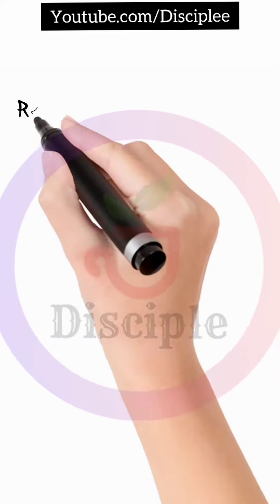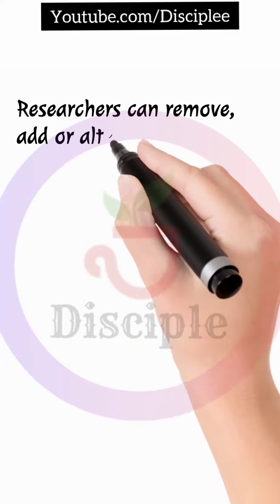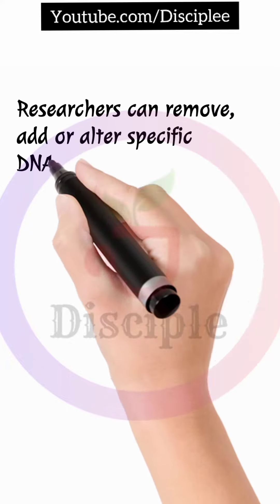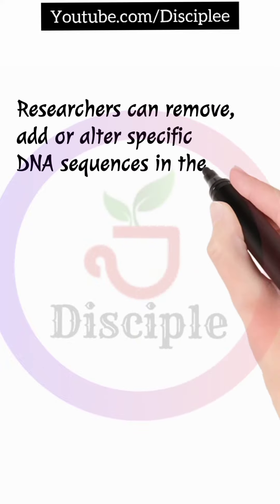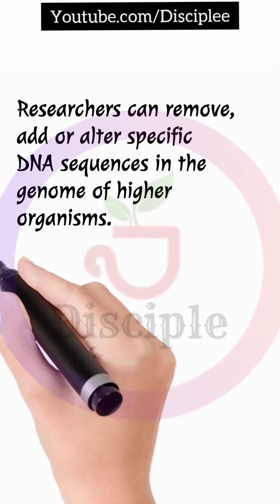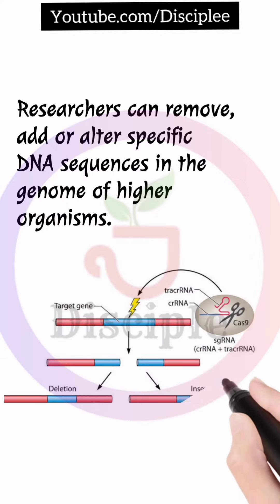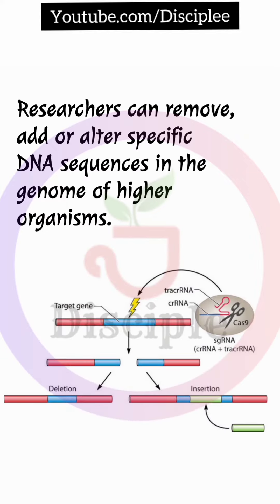Using components of the CRISPR system, researchers can remove, add, or alter specific DNA sequences in the genome of higher organisms.